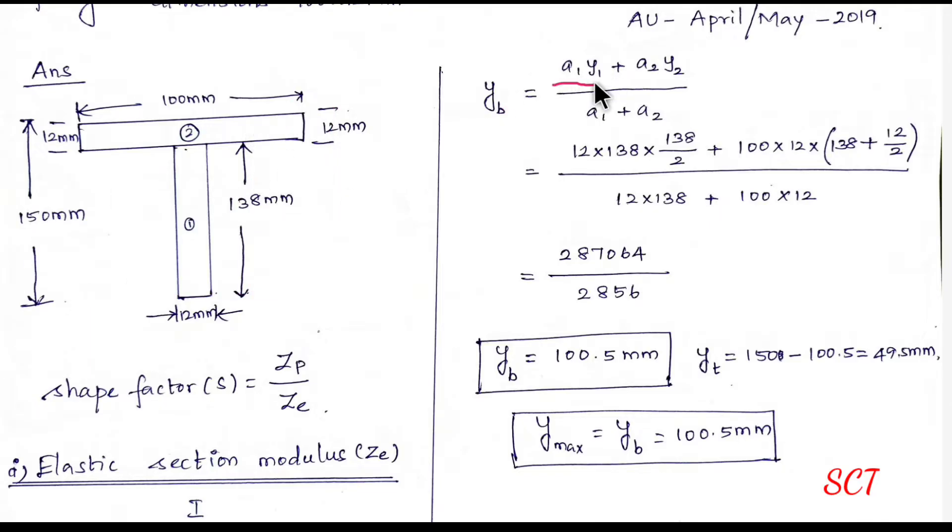So, the section formula is A1, Y1 plus A2, Y2 divided by A1 plus A2. If A1 plus A2 is equal to the total section area.